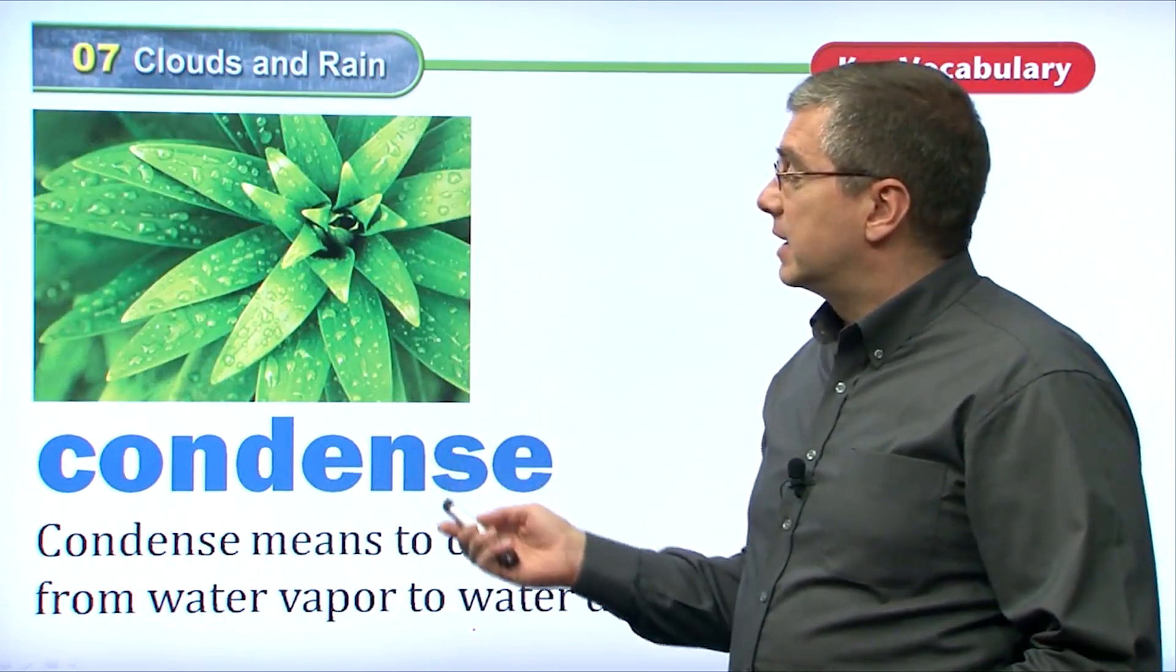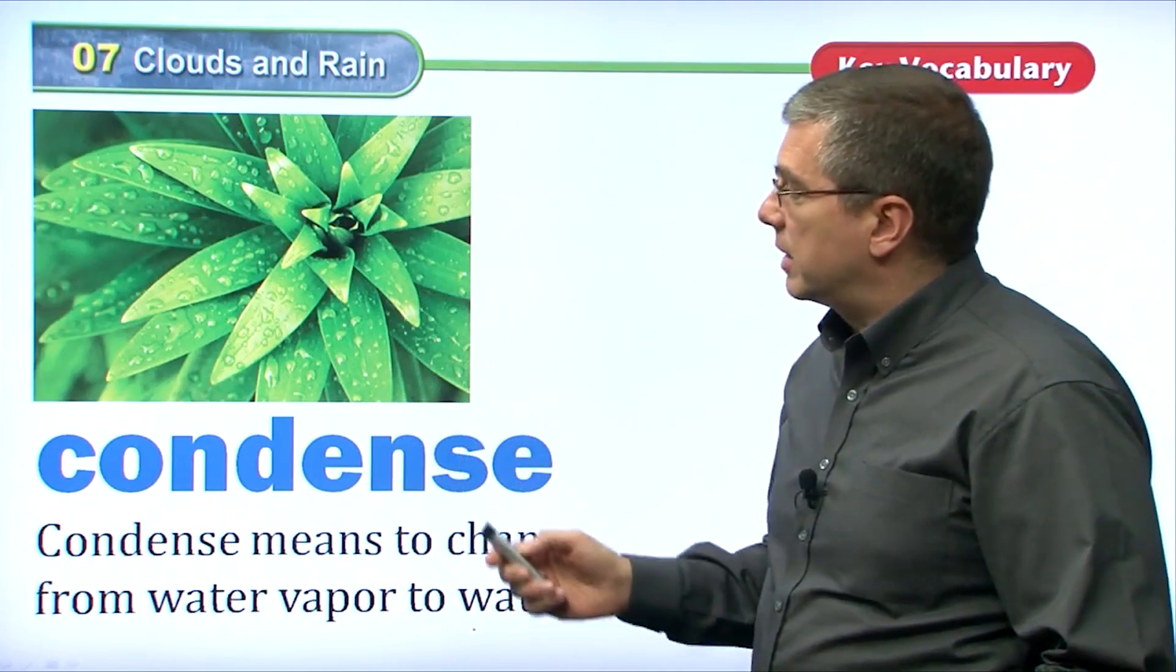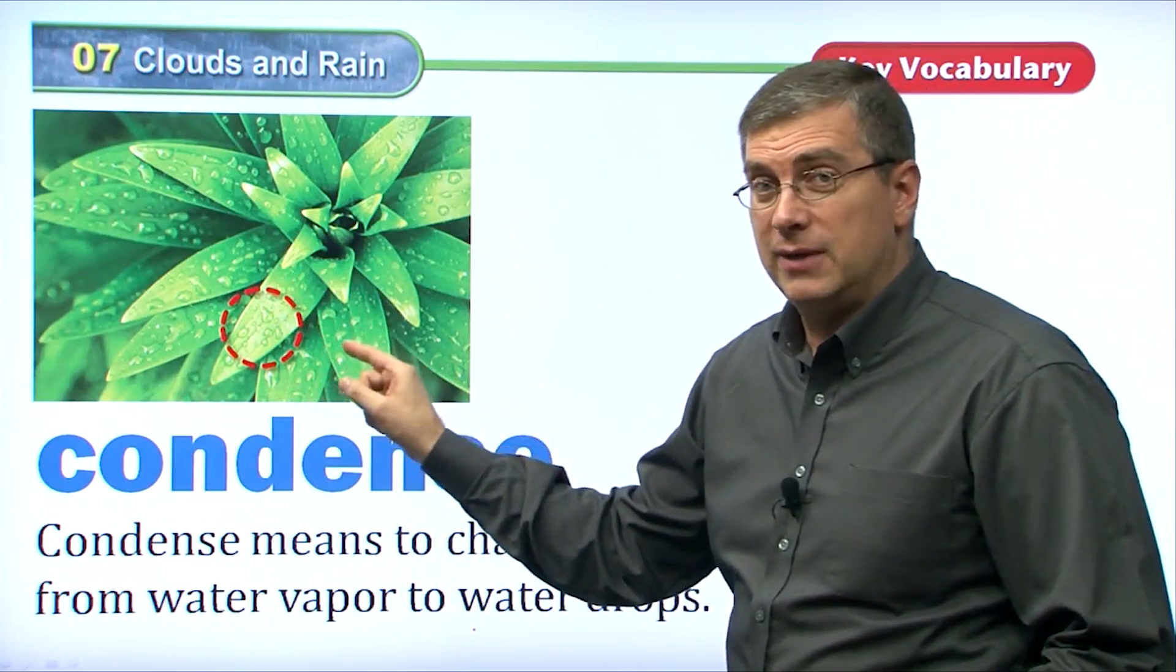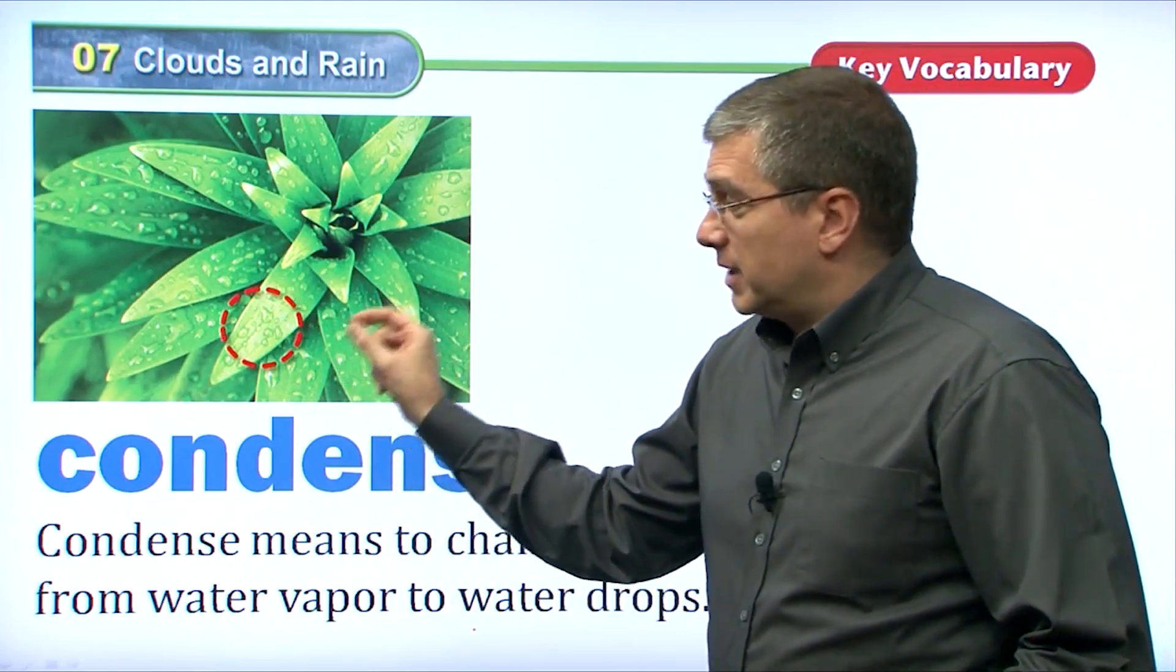Our next word is to condense. Let's take a look at the picture here. I want you to focus in on this red circle. Do you see the water drops on the leaf? These water drops have condensed.